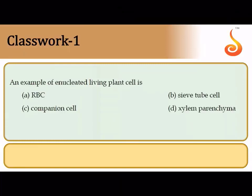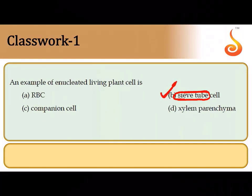An example of an enucleated living plant cell: in animals it would be the RBC, but in plants it is the sieve tube element — a component of phloem tissue. The sieve tube does not have a nucleus; it is maintained by the companion cell, which maintains the pressure gradients within the sieve tube.